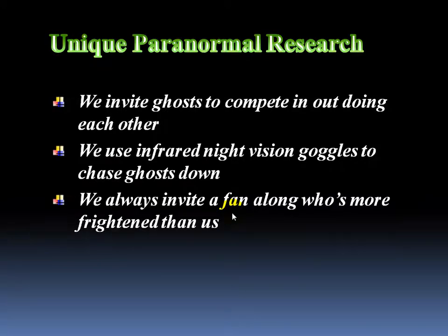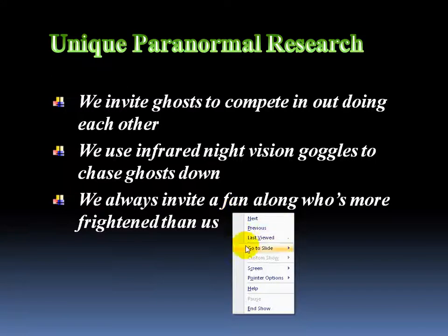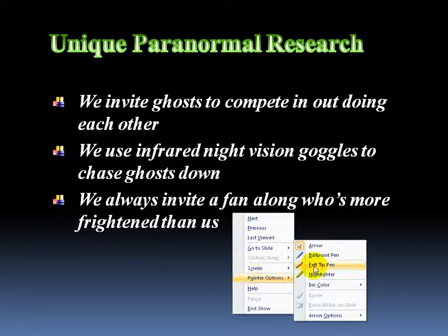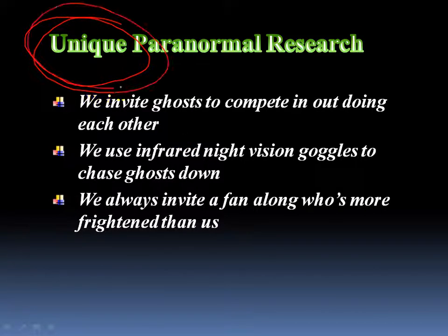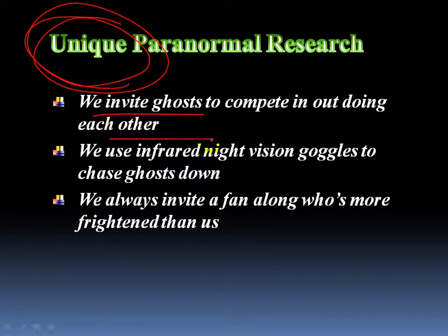Now, when you right-click you get some options, and I want to go over the pointer options. I have a felt tip pen and a ballpoint pen. Let me go ahead and go with felt tip, and you can see my pointer changes into a little red dot, in which case I can emphasize a few points — circling things around there. You can keep clicking and dragging, but that's not going to work for me.